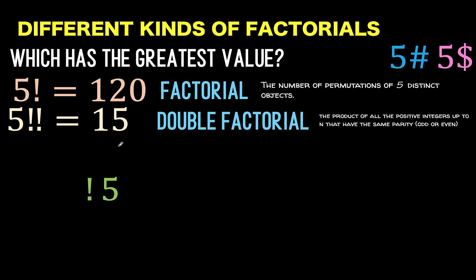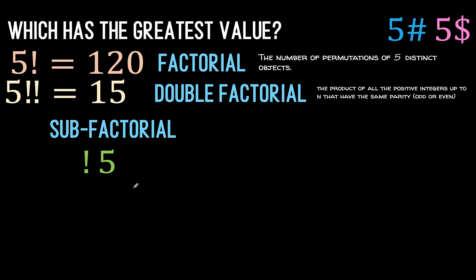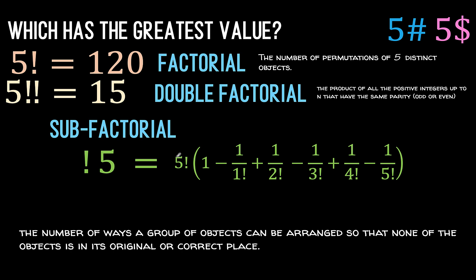The next one is the exclamation point 5, which is the sub-factorial of 5. The sub-factorial means the number of ways a group of objects can be arranged so that none of the objects is in its original or correct place. The other term for this is derangement. The sub-factorial of 5 is computed by starting with 5 factorial and multiplying it by 1 minus 1 over 1 factorial plus 1 over 2 factorial minus 1 over 3 factorial, until you arrive at 1 over n factorial.